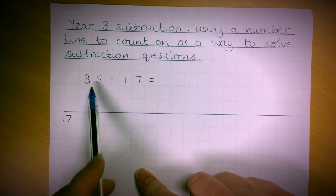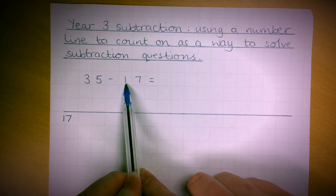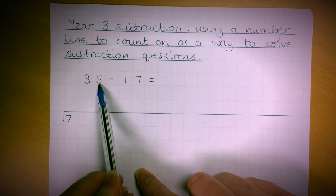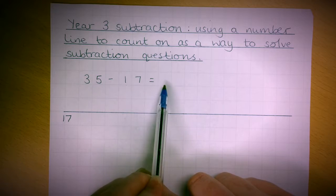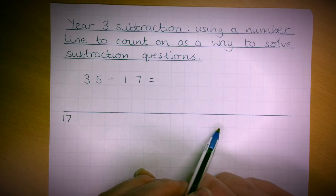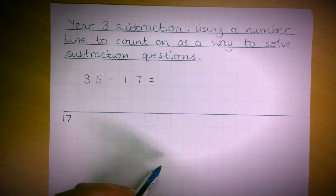Often you'll find that they'll just look and go 'three take away one is two, and then five take away seven is two' and they'll come up with 22, which as you'll see in a moment is incorrect.